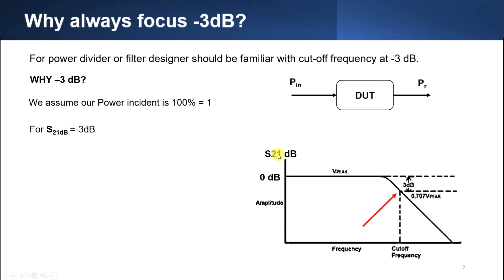Next, we have the graph here showing S21 in dB. You can observe that the cutoff frequency is at negative 3dB — here is 0 and the gap is 3dB, so you will have negative 3dB here, which corresponds to 0.707V. We will talk about that later. Focus on negative 3dB first — this is the cutoff frequency.